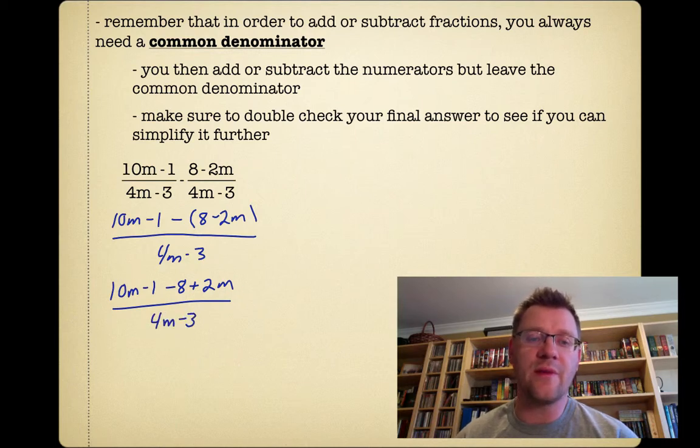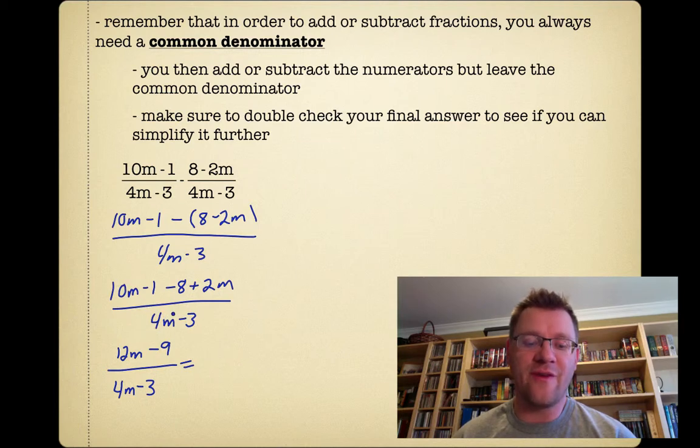We can combine like terms in the top. That's 12m minus 9 over 4m minus 3. And at this point, we should also make sure to state our non-permissible values. So we know that 4m minus 3 can't equal 0. So that means that m cannot equal 3 quarters. And we've done the math on this sort of thing before. We move the 3 over, it becomes positive, we divide by 4.